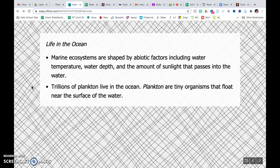The marine ecosystems are shaped by abiotic factors like water temperature, water depth, and the amount of sunlight that passes into the water. And all of these are very important. You have trillions of plankton that live in the ocean. Plankton are these microscopic tiny organisms that float near the surface of the water.